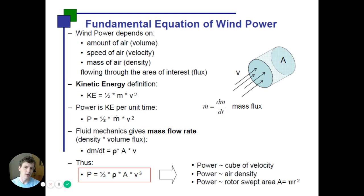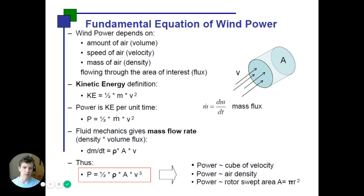This equation is really important because it tells us how much wind power can be extracted by a wind turbine. Power is linearly related to air density — which we'll mostly assume is constant — and also linearly related to the rotor swept area, the size of the circle made by the rotation of the turbine blades. We can control that by building larger turbines with greater rotor swept areas.